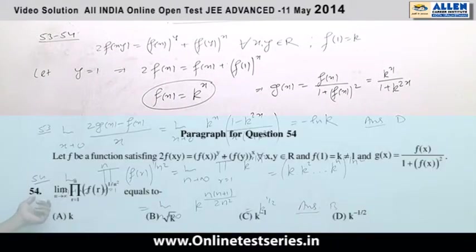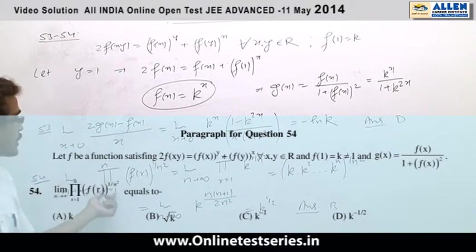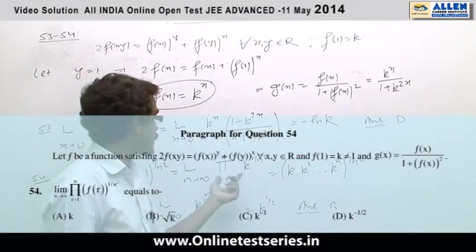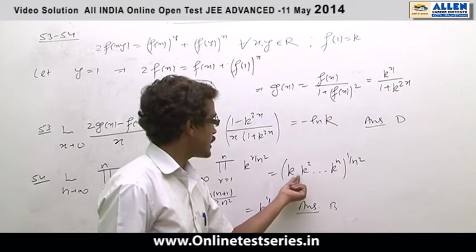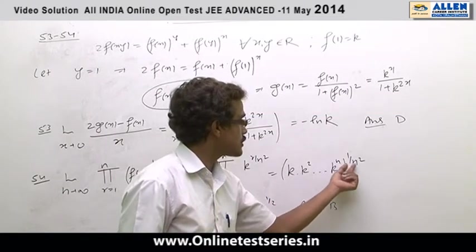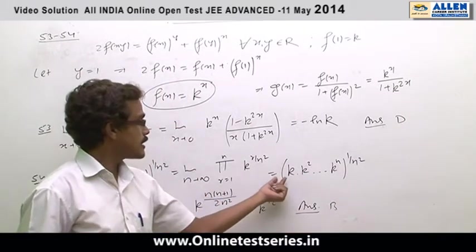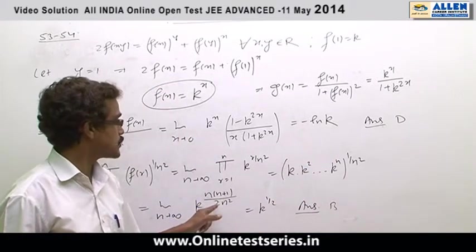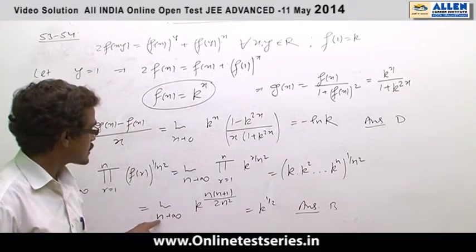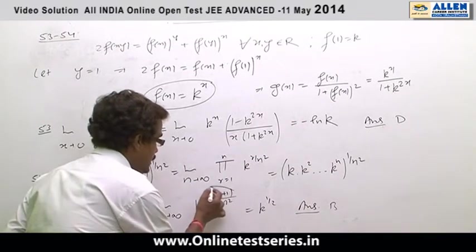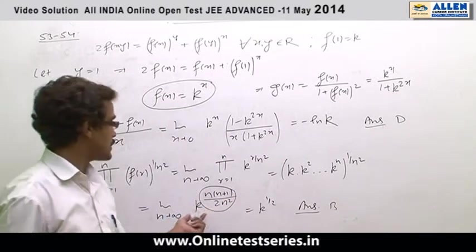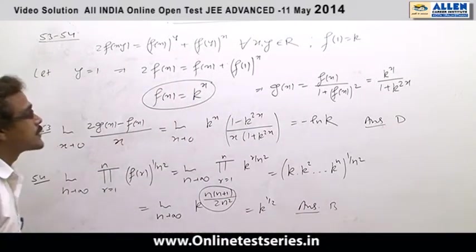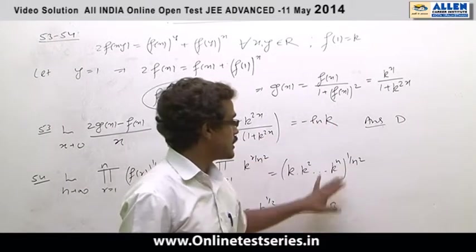In question number 54, we have to find the limit as n tends to infinity of the product from r equals 1 to n of f(r) raised to power 1 by n squared. This becomes k raised to power 1 plus 2 plus 3 till n, sum of n natural numbers which is n times n plus 1 by 2, power 1 by n squared. If n tends to infinity, the limit of this expression equals half. Final result will be k raised to power half, which is option B.